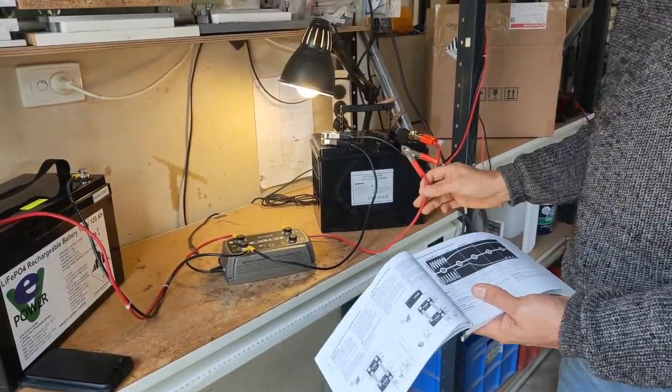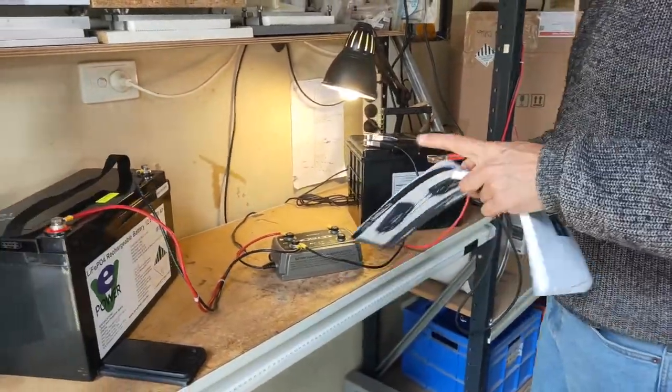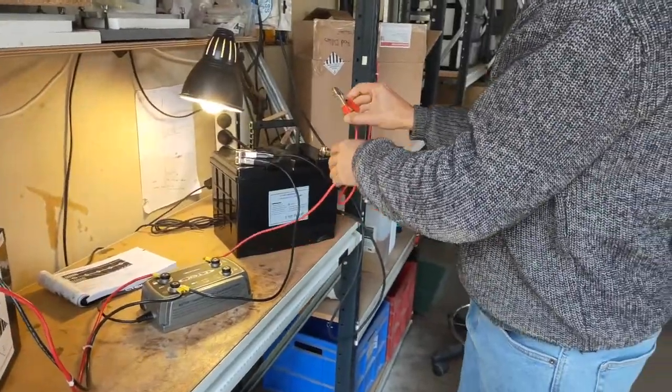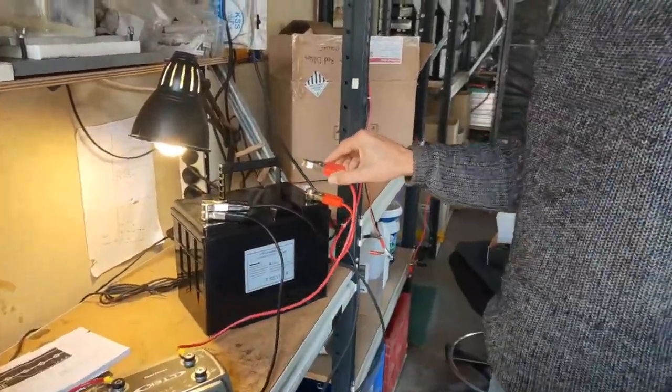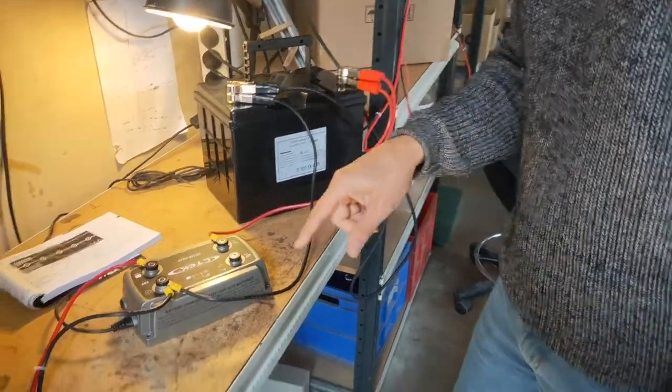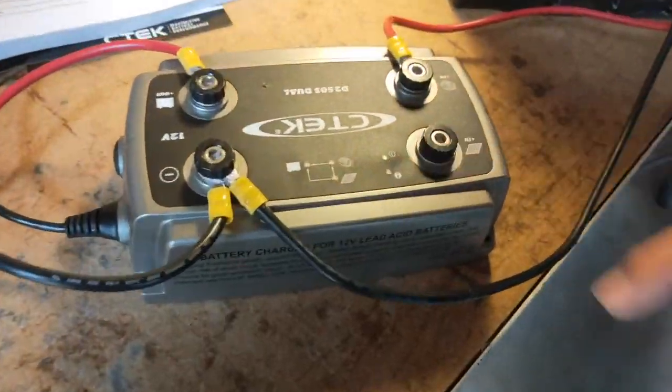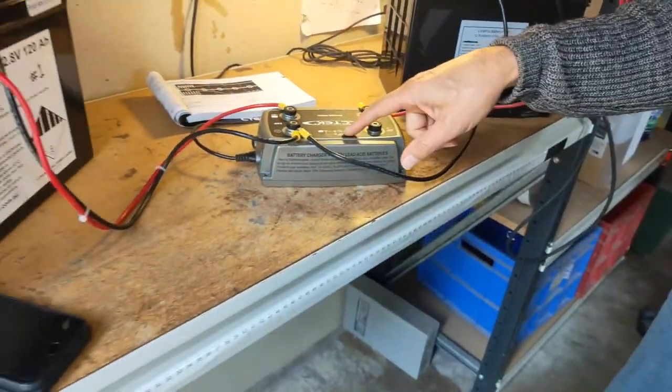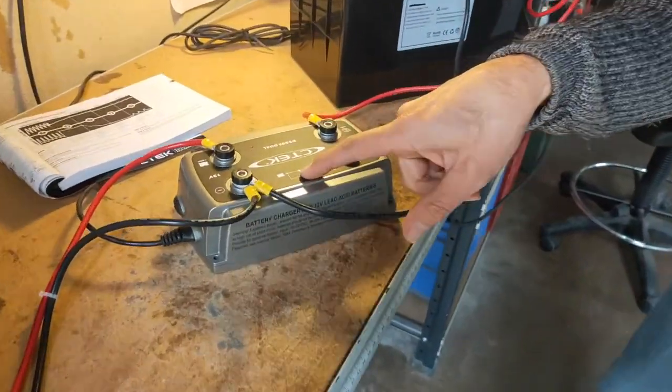So I've just got to make the last connection. This is the point where we hope the smoke doesn't come out. That goes on there. I saw a little flash there and now we've got power on our CTEK and we've got some alternator charging happening.